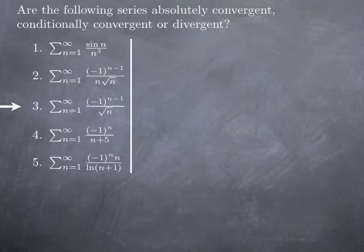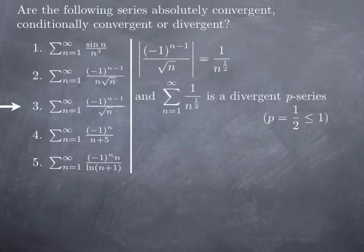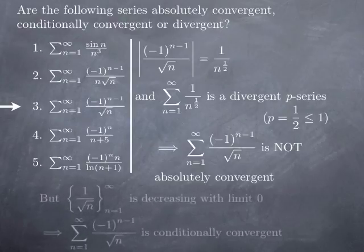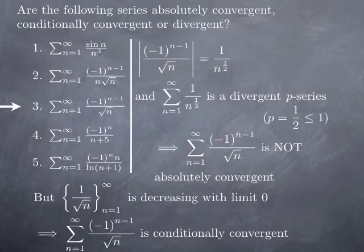Turning to the series of (-1)^(n-1) / √n. First we check absolute convergence: the absolute value of the general term is 1/n^(1/2), and this series diverges as a p-series with p = 1/2 ≤ 1. So the series is not absolutely convergent. However, it may still be conditionally convergent. By the alternating series test, the sequence 1/√n is decreasing with limit 0 since √n increases to infinity. Therefore the series converges, and since it is not absolutely convergent, it is conditionally convergent.